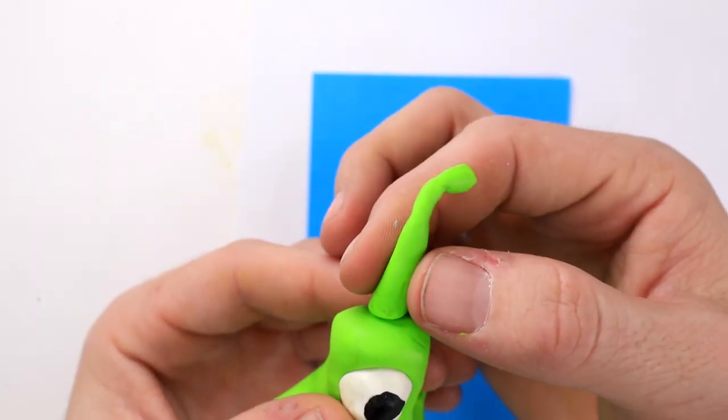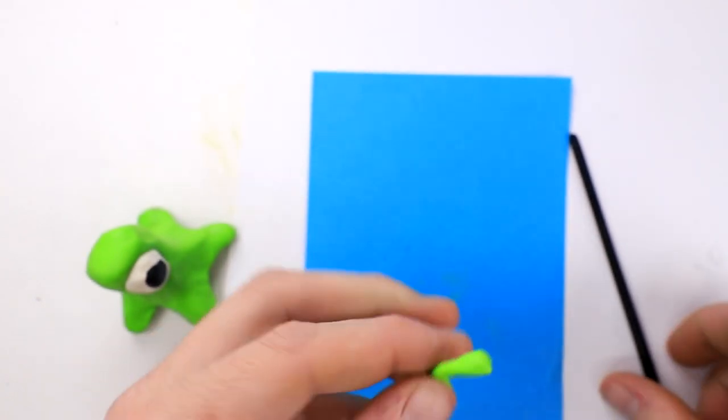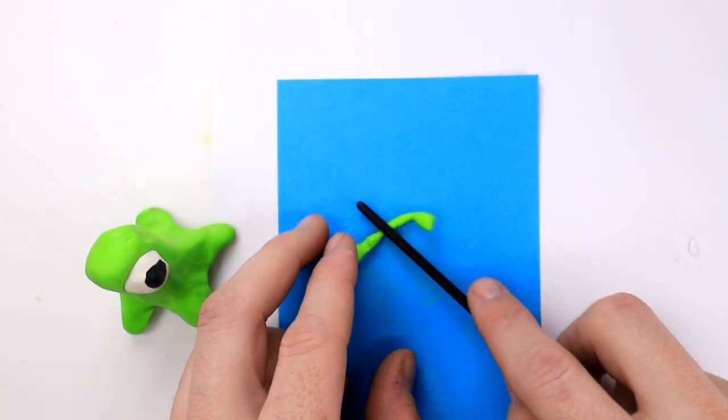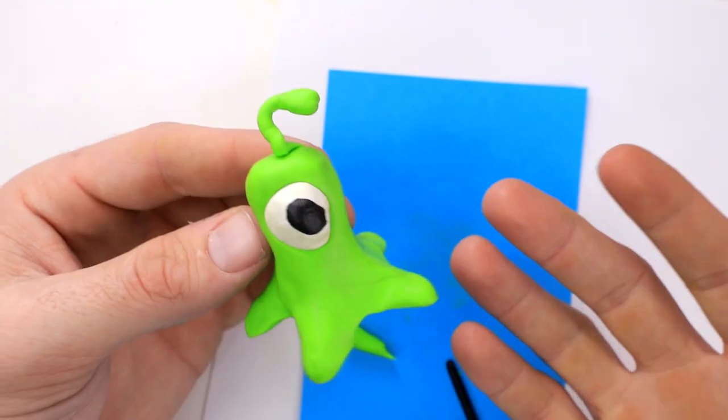Okay, that doesn't look too bad. Stick that right on. Oh, his antenna is even smaller, so I have to make it thinner. There we go. Attach that to his head. And there we go.